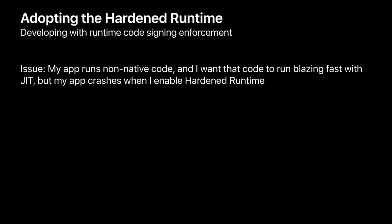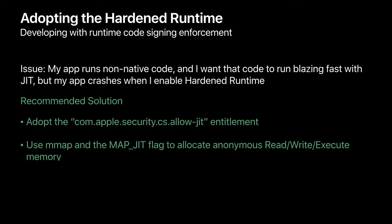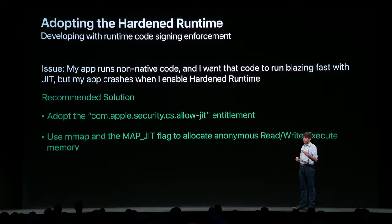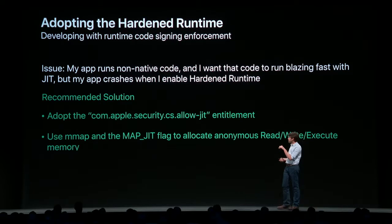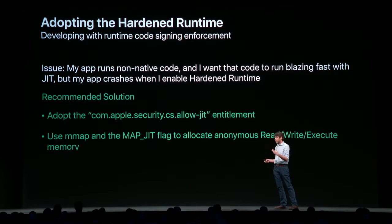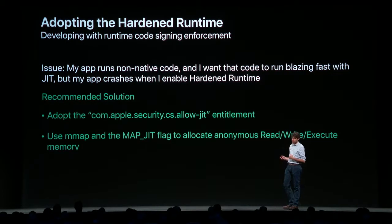One of the challenges that can come up with runtime code signing enforcement is if your code uses JIT to make non-native code run fast within your app. To do this, we recommend that you use the allow-JIT entitlement and then use the MAP_JIT flag when allocating your read-write-execute memory that you're compiling the JIT code into. This allows us to keep the rest of the protections on all of your other memory within the system, while giving you this scratch-based memory to do what you need with respect to JIT.